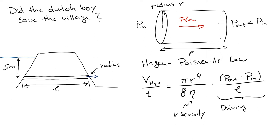In the Hagen-Poiseuille equation, the volume flowing through the pipe per unit time is proportional to the pressure difference — the higher the pressure, the more flow, which makes sense. It is also inversely proportional to the length: the longer the conduit through the dike is, the less the volume flow will be, which is also intuitive.